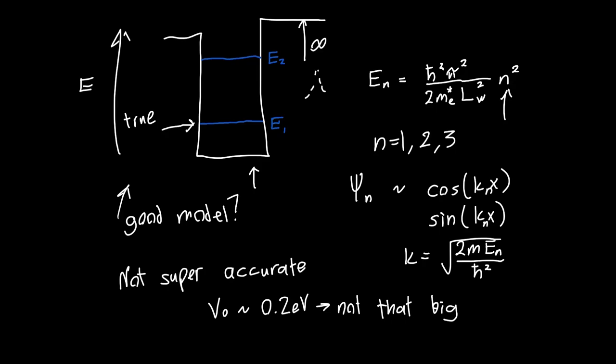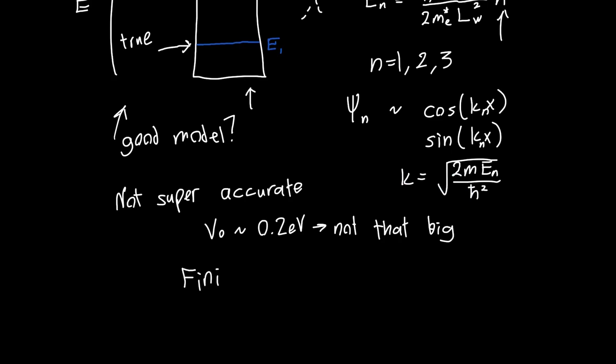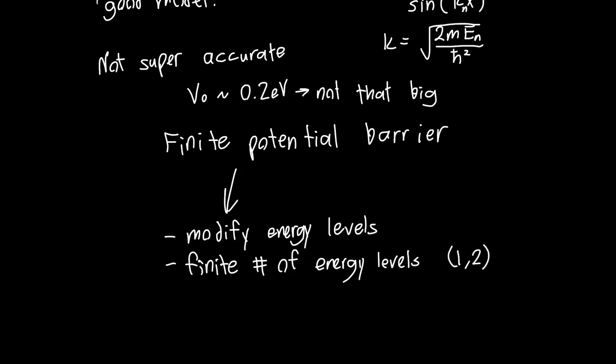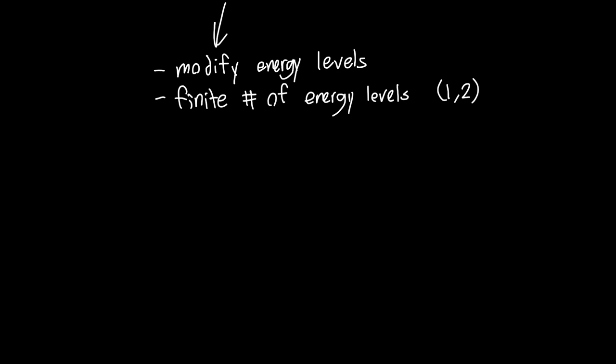So in reality we don't have an infinite potential barrier, we've got a finite potential barrier. We want to figure out how to deal with this finite potential barrier, but the cliff notes of that are that it will modify the energy levels. So you're still going to have discrete energy levels E1, E2 and so on, and you're also going to have a finite number of energy levels.